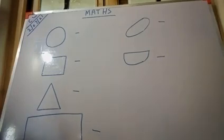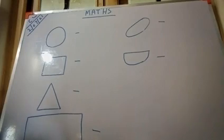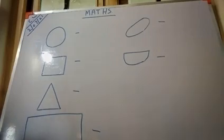We will proceed one by one — square, rectangle, and so on. You will also learn the spellings, number names, and forward counting is ongoing. You will learn the tables very well. That's all for today. Have a good day. Thank you.